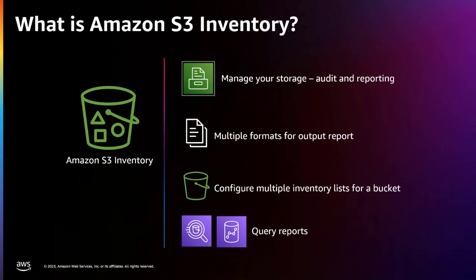Starting with: what is Amazon S3 inventory? Amazon S3 inventory helps you manage your storage by creating lists of the objects in an S3 bucket on a defined schedule. You can use it to audit and report the status of your objects for business, compliance, and regulatory needs. You can also simplify and speed up business workflows and big data jobs using Amazon S3 inventory.